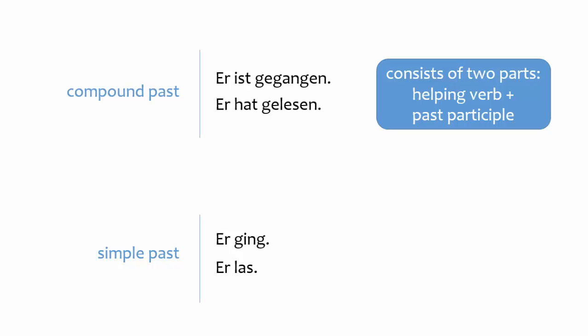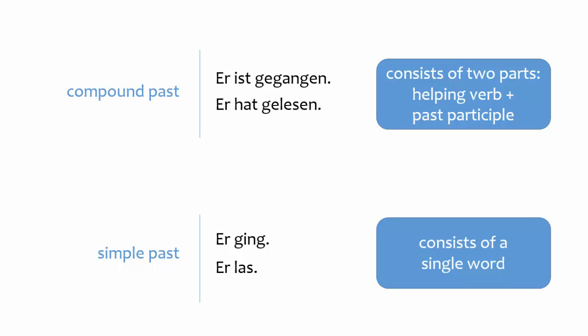There is a second past tense form that is used in special situations. It's called the simple past, so named because it consists of a single verb, as opposed to the compound past, which consists of a helping verb and a past participle.